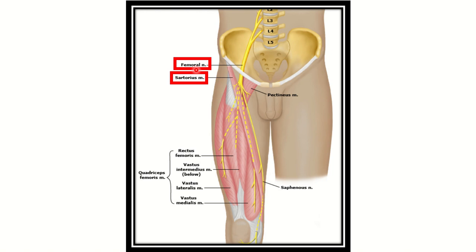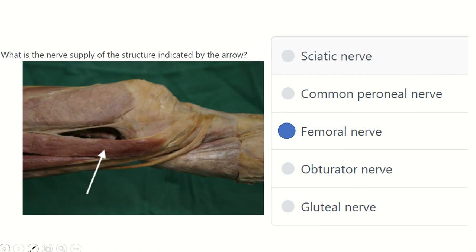This nerve is the femoral nerve, so the sartorius muscle receives its nerve supply from the femoral nerve, along with other muscles such as rectus femoris, vastus intermedius, vastus lateralis, and vastus medialis. All these muscles of the anterior compartment of the thigh are supplied by the femoral nerve.